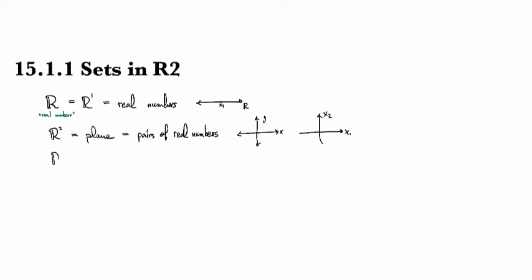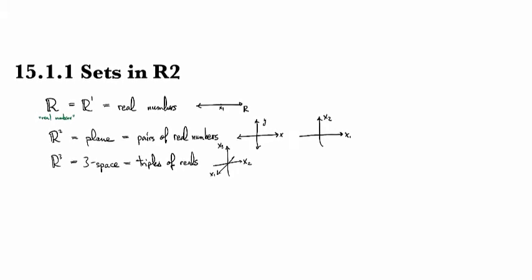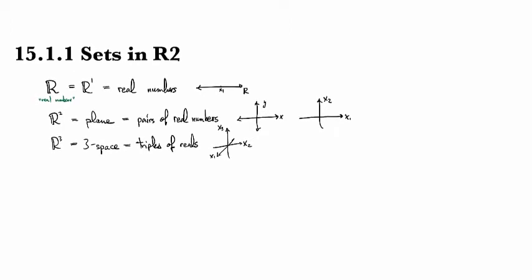And then we have R³. This is three-space, for lack of a better word, and this is all triples of real numbers. It's typically depicted like this, with an X₁ axis, an X₂ axis, and an X₃ axis. I'll always number them in that order, although I might draw it from different perspectives.